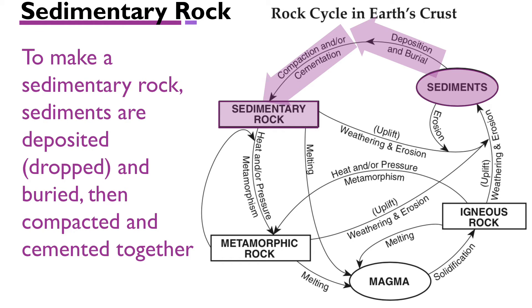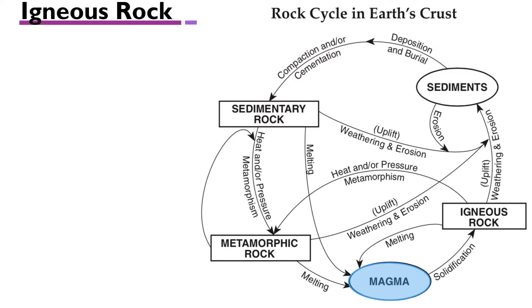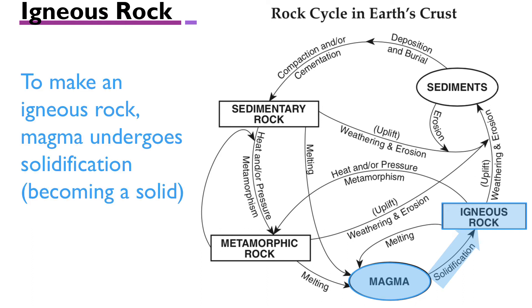To get an igneous rock, it all starts with magma. Lava is not listed here as an ingredient, but lava would also be appropriate. The magma must undergo solidification—that means cooling and becoming a solid. To summarize: to make an igneous rock, the magma undergoes solidification, becoming a solid, and then you have the igneous rock.